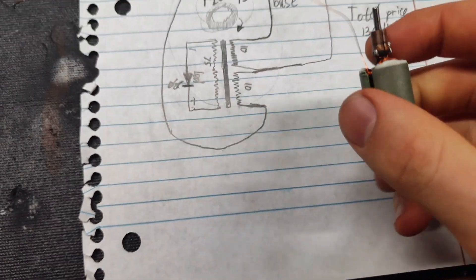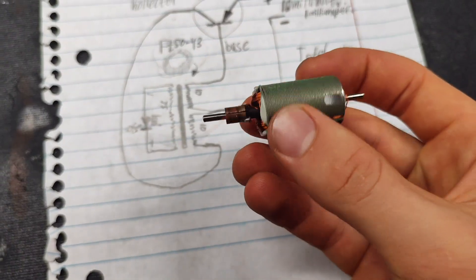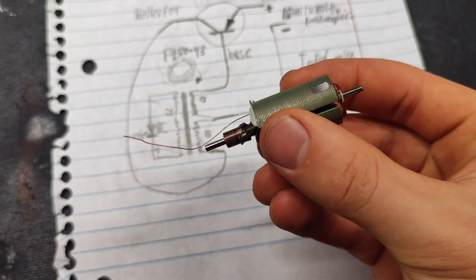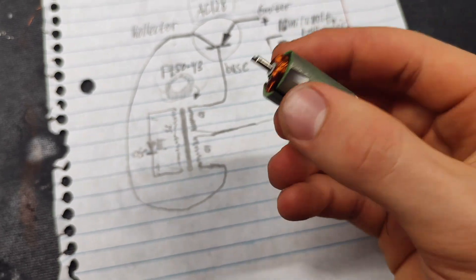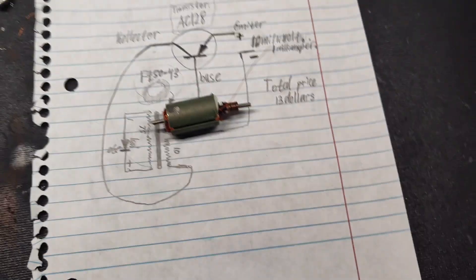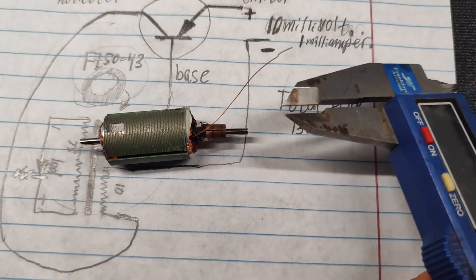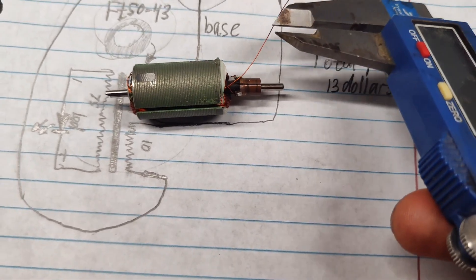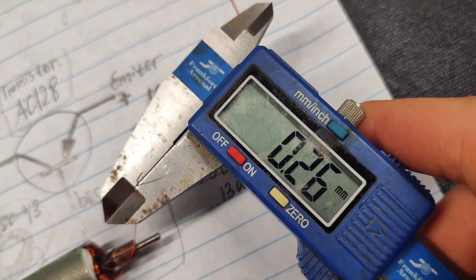The copper wire which I use comes from an electric motor rotor. The wire thickness is 0.25 millimeters.